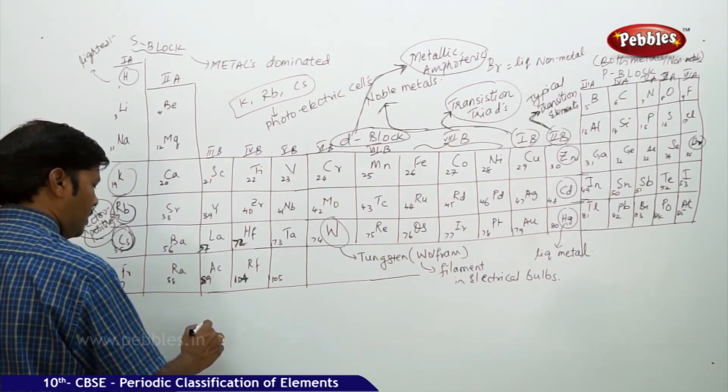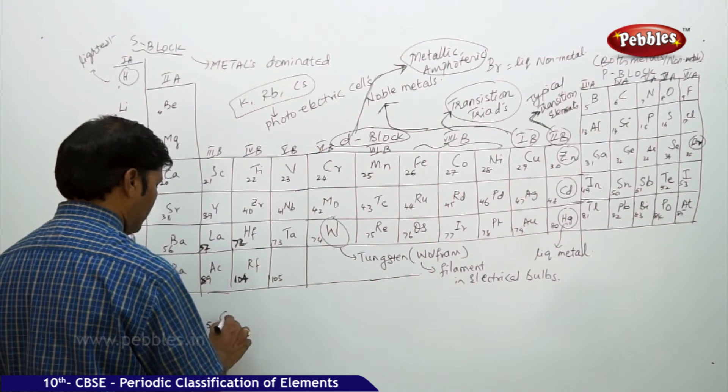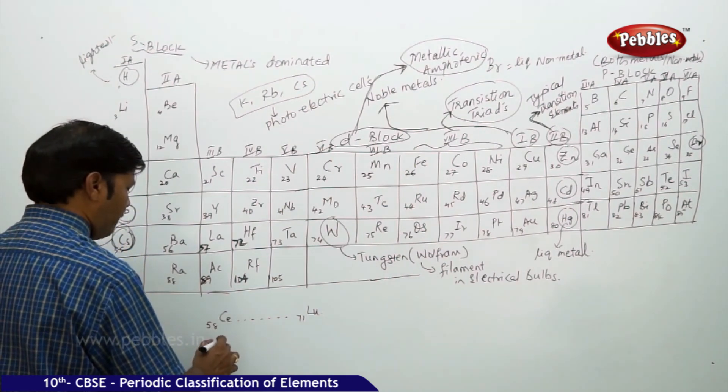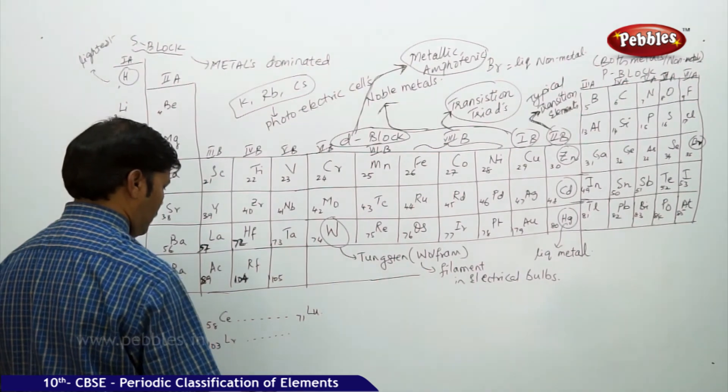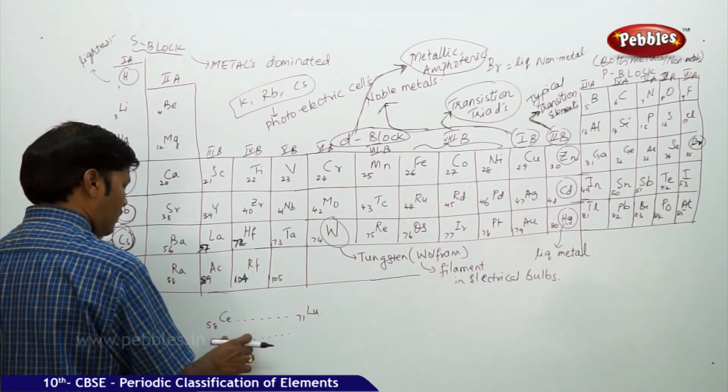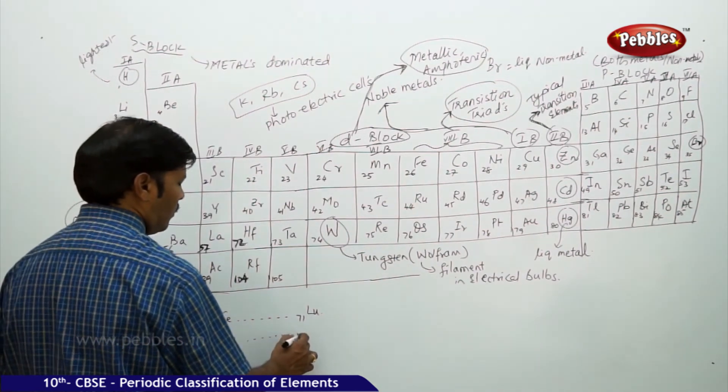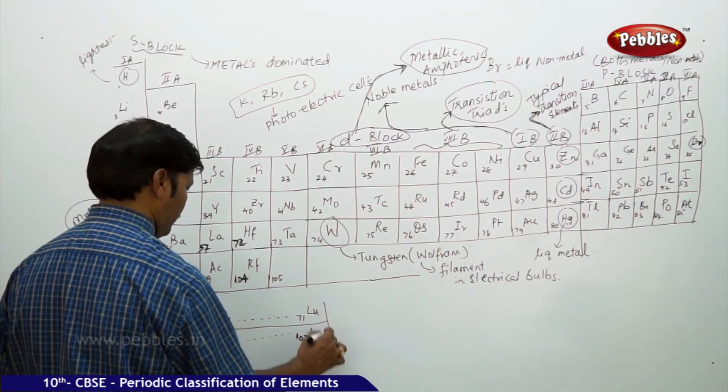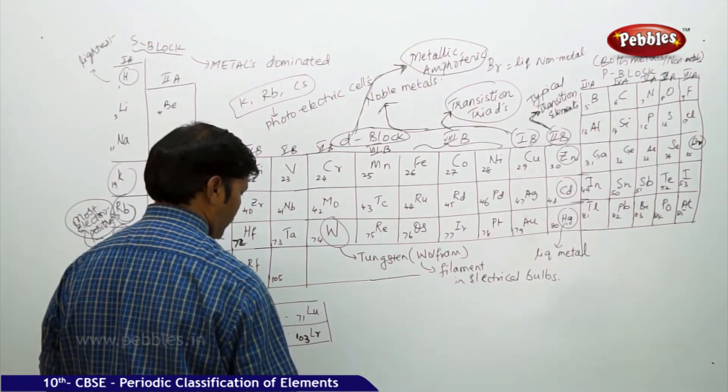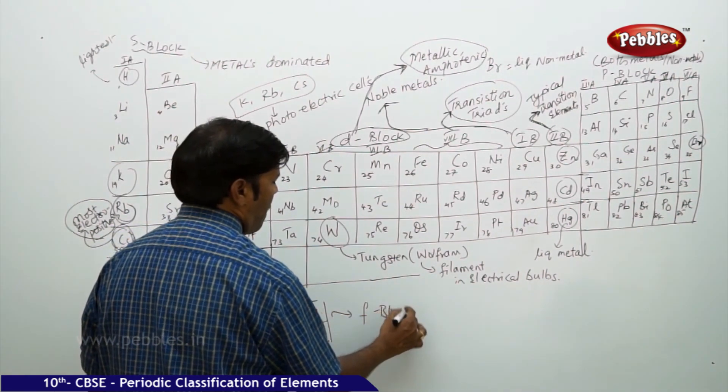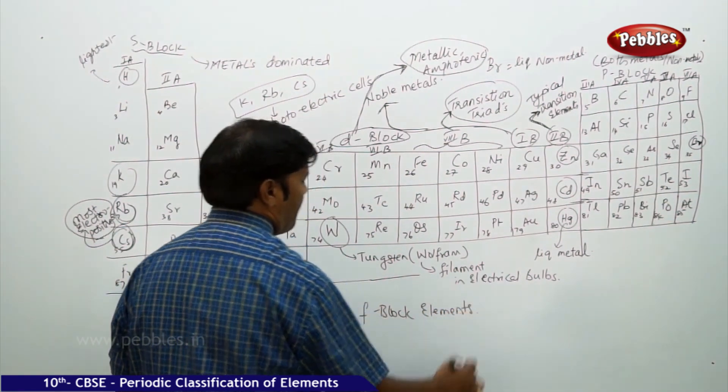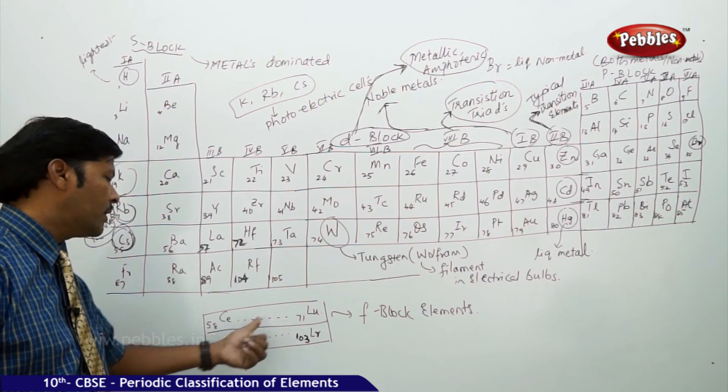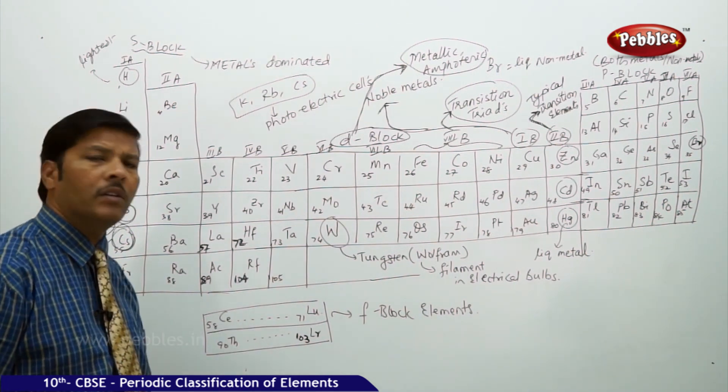You can take 58 cerium to 71 lutetium and 90 thorium to 103 lawrencium. This comes under F block elements. 90 thorium to 103 lawrencium and 58 cerium to 71 lutetium comes under F block elements.